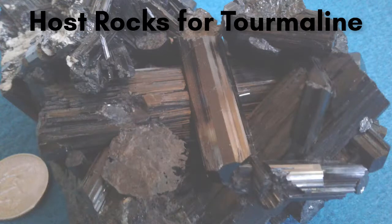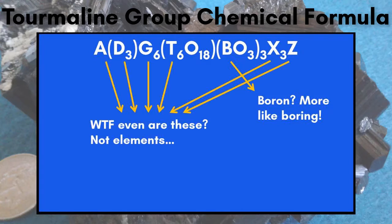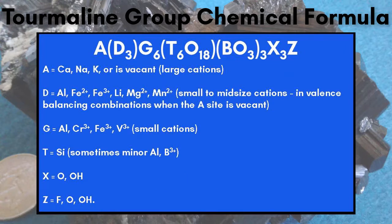The tourmaline group has a very complex chemical formula. As you can see, all the trash elements that the other minerals didn't want got put here. That is why it is called the garbage can of minerals. By the way, those aren't elements — the chemical formula keeps going, and gets worse.